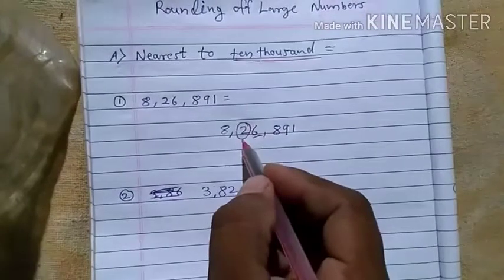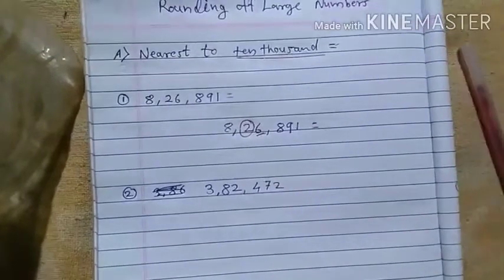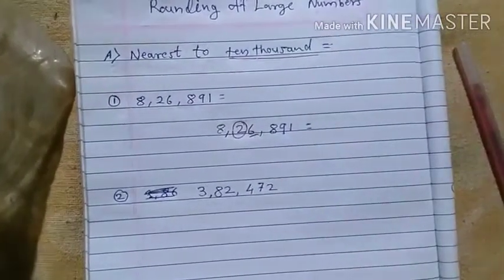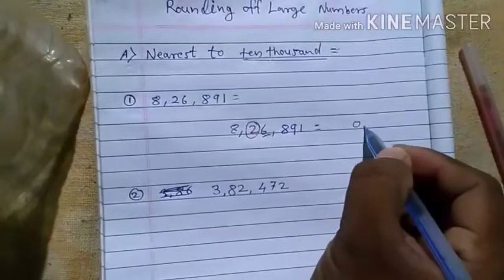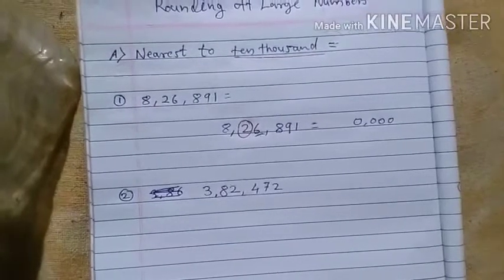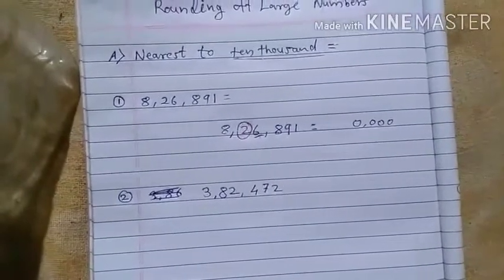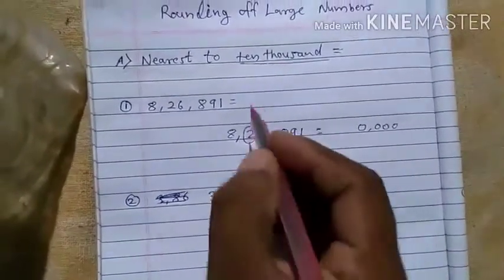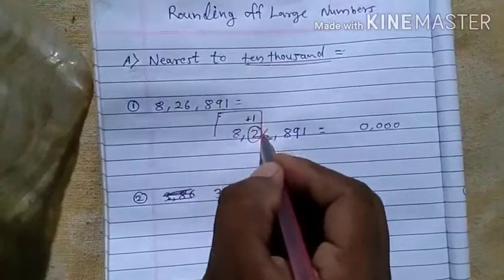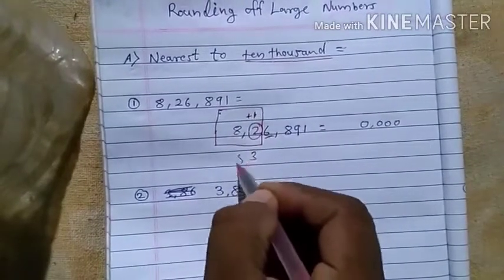We circled the ten-thousands place and underlined the digit to its right. Now, count how many digits are to the right of the circle — one, two, three, four — we write that many zeros. The boxed digits need to be kept as they are: one, two, three — and this number becomes eight.